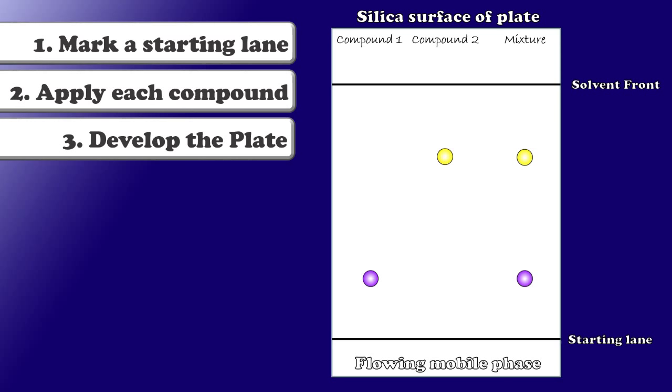But we need to quantify exactly how our spots moved. To simply say that one move farther than the other doesn't tell the entire story. We do this using measurements of the distance traveled by the solvent itself and the distance traveled by the samples. Measuring from the starting lane to the center of the spot. These give me some numerical values that I can use to assign a number to the mobility of a compound instead of simply saying one's more mobile than the other. We call this number a retention factor, RF. And it's calculated using the distance traveled by our sample divided by the distance traveled by the solvent.